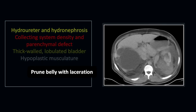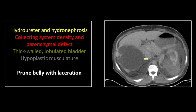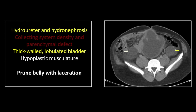Our next case is a case of prune belly with dilated, obstructed kidneys and an associated laceration. The uninjured right kidney has a markedly dilated collecting system and just a bare wisp of remaining atrophied surrounding renal parenchyma consistent with long-standing obstruction. In the left kidney, there are similar but less pronounced changes with a dilated collecting system and atrophied parenchyma, but also a through-and-through defect of that atrophied left renal parenchyma with hyperdensity consistent with hemorrhage and clot. Farther down, you can appreciate marked dilation of both ureters and a distended, lobulated, and irregularly thickened bladder. Note also the near-complete absence of anterior abdominal wall musculature, essentially diagnostic of prune belly syndrome.